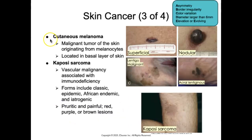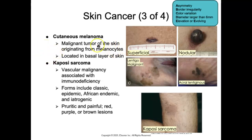Cutaneous melanoma is a malignant tumor of the skin originating from the melanocytes. You are more at risk if you have a personal or family history of melanoma, UV radiation exposure, and are light-skinned with repeated sunburns, among other risk factors. This cancer is increasing worldwide. Melanoma is located in the basal layer of the skin where melanocytes reside, and results from their degeneration.